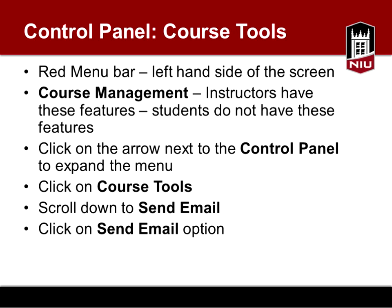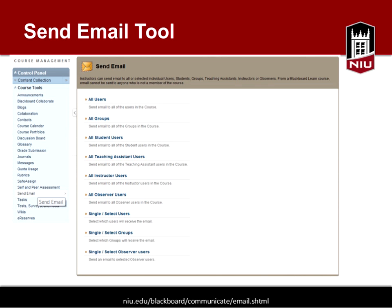To access the email tool in Blackboard, you look at the control panel as an instructor — students don't have those tools. Select course tools, go to course management, and then you can select 'Send an Email.' When you click on the send email tool, there are many different options: you can send email to all users, to groups if you have them set up, or to individual users.